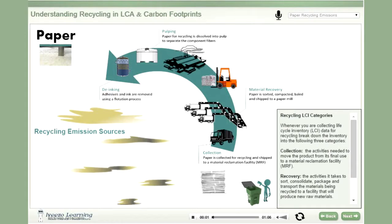What activities happen when paper is recycled? First, we place our paper into a recycling bin or take it to the local recycling center. It is then transported to a material reclamation facility, known as a MRF (M-R-F), where it is sorted and compressed into bales for transport to a paper mill.